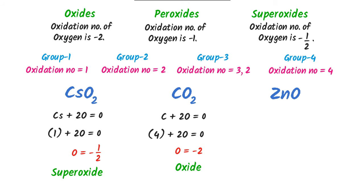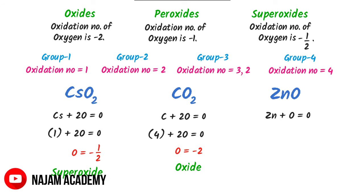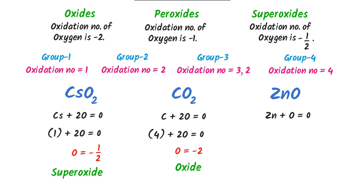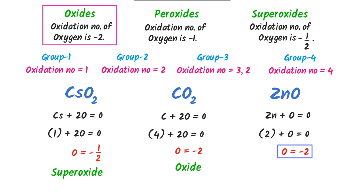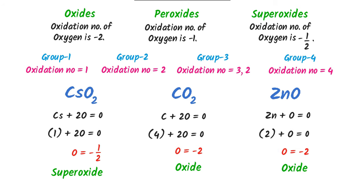Thirdly, for ZnO, I write: zinc + oxygen = 0. In most cases, the oxidation state of zinc is +2, so 2 + oxygen = 0, and oxygen = −2. The oxidation state of oxygen is −2, so it is also oxide.